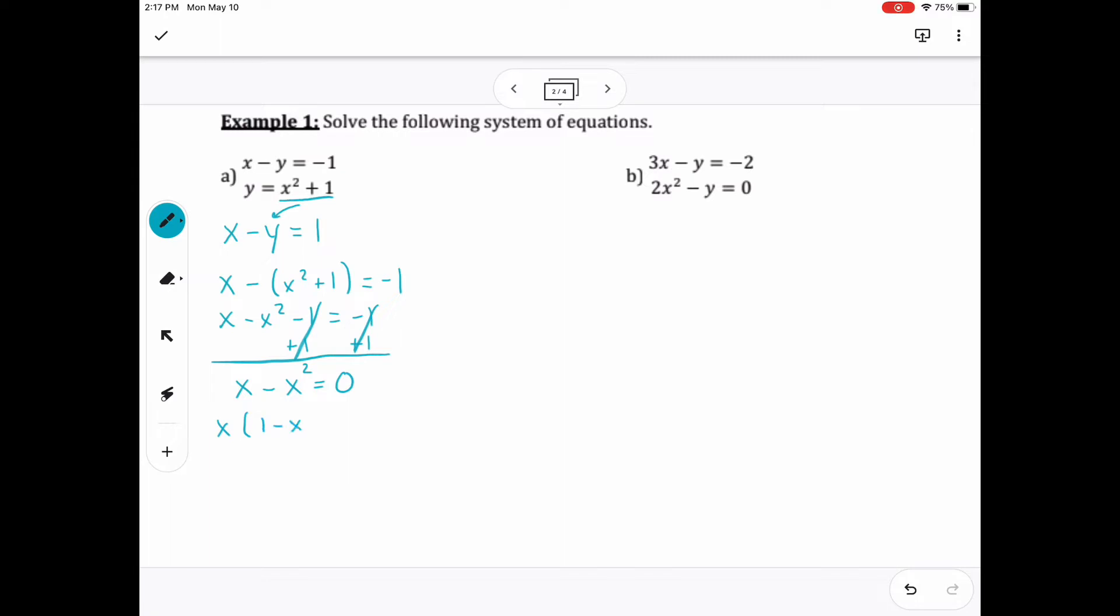That cancels it out. Remember, I want to factor out the x that's common between x minus x squared, and then that gives me x times 1 minus x. Set them both equal to 0 and solve.